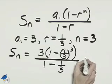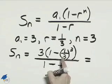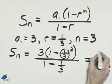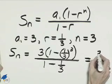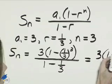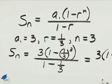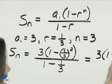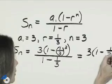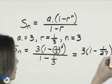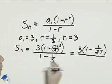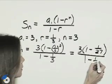We'll work inside the parentheses first and evaluate 1 third to the third power. That's 3 on the outside times the quantity 1 minus 1 over 27, and then 1 minus 1 third in the denominator.